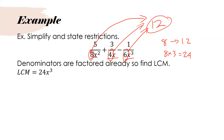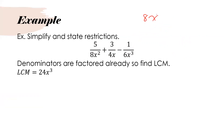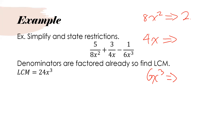Now, what about the lowest common multiple for the powers of x? I notice that all the denominators have x but different exponents: 8x squared, 4x, and 6x cubed. I need to pick the lowest common multiple that works for all of them. I need to make sure all these denominators can multiply to give me the lowest common multiple — just like with fractions. I cannot use just x as my lowest common multiple because x cubed cannot be reached by multiplying from x.